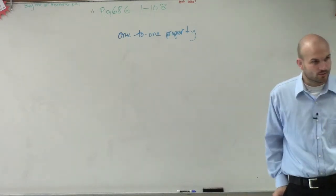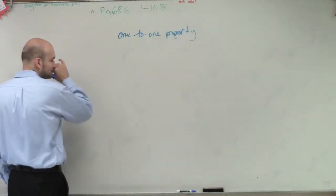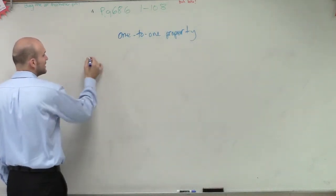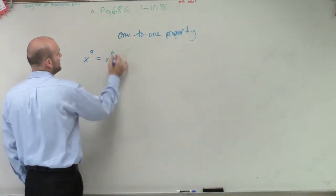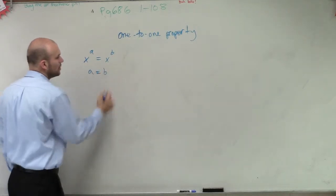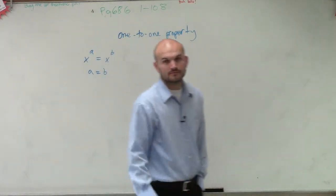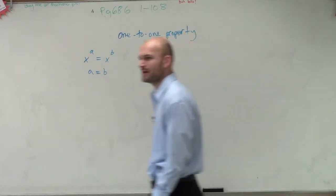Alright, so the first property I'm going to talk about is the one-to-one property, and I'll go through a basic definition for you guys. So the definition: if I have x^a equals x^b, then we know that a has to equal b. Alright. Now you might say, well okay, that might seem to have simple sense, but I'm not really understanding.